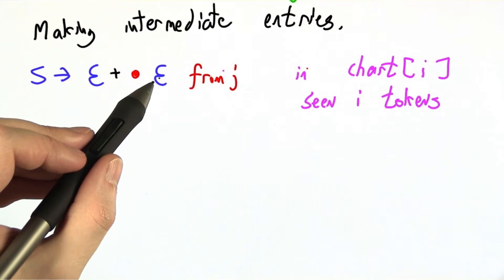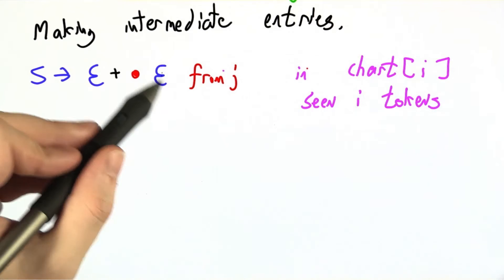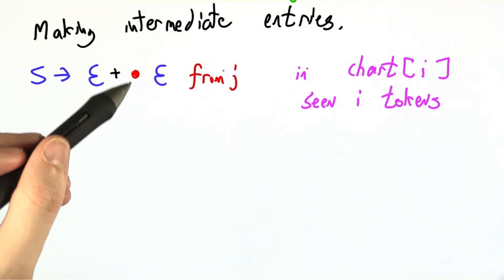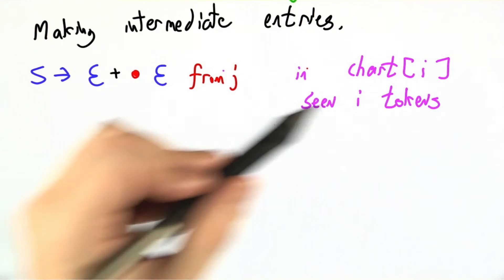So I'm going to need to look in our grammar for all the rules that start with E, because if E goes to elephant, then I should be expecting to see an elephant in chart state I.